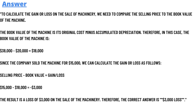To calculate the gain or loss on the sale of machinery, we need to compare the selling price to the book value of the machine. The book value is its original cost minus accumulated depreciation. In this case, the book value of the machine is 38,000 minus 20,000, which equals 80,000.